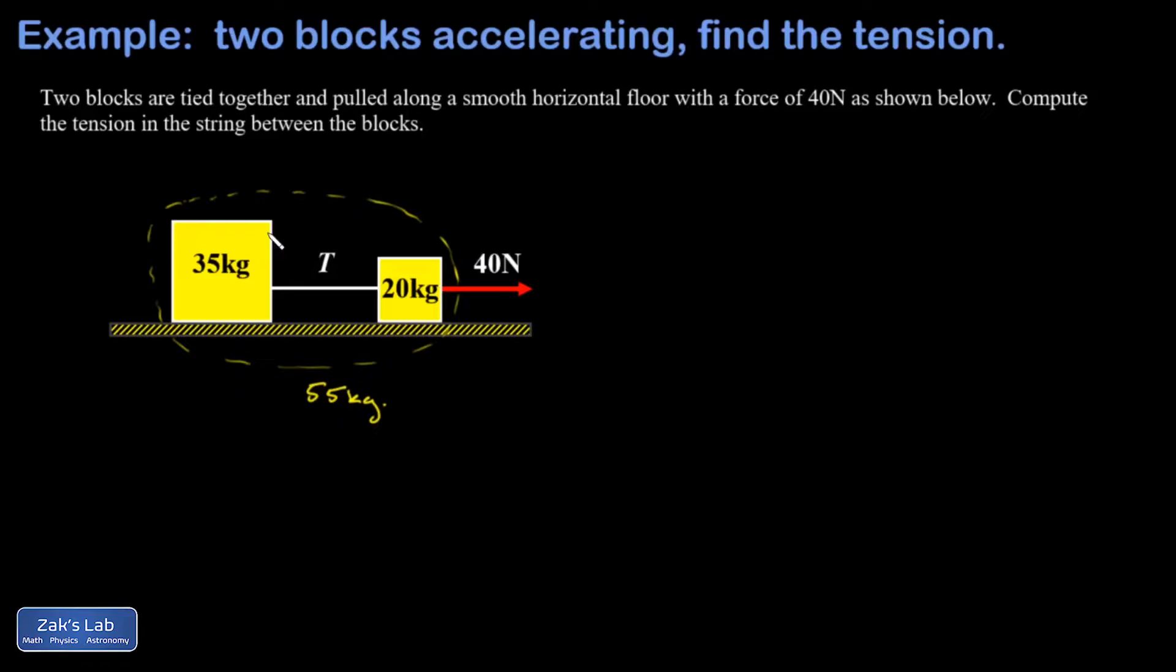I start out with the combined masses and I apply Newton's second law. I'm just going to write it in the form a equals F over m, or F net over m. We're just working in the horizontal direction here.